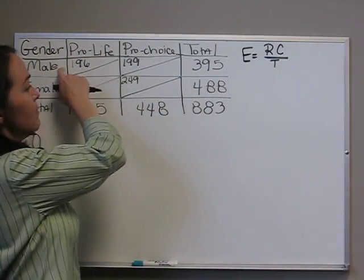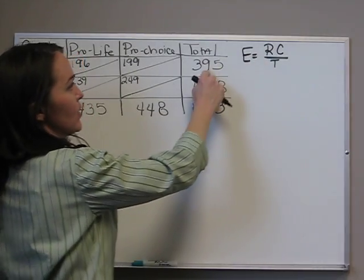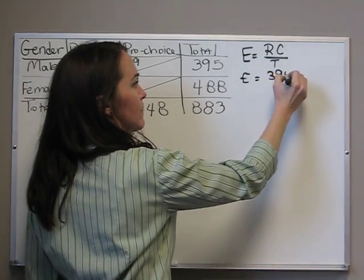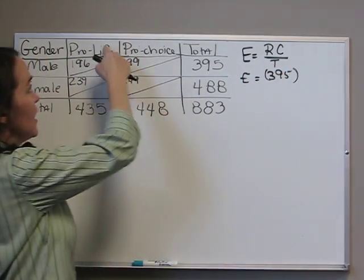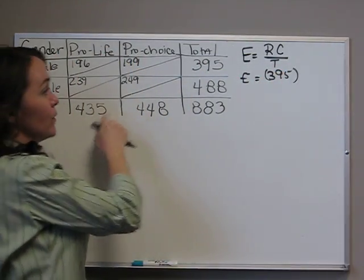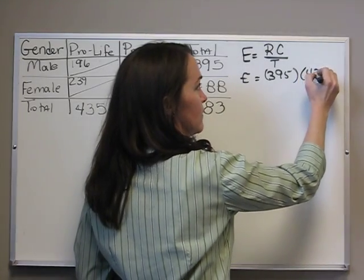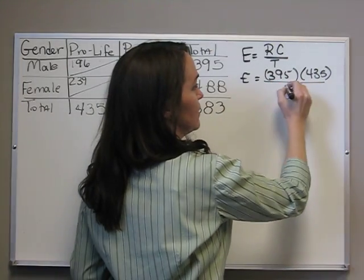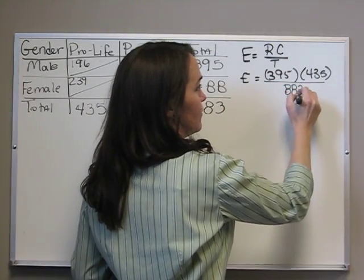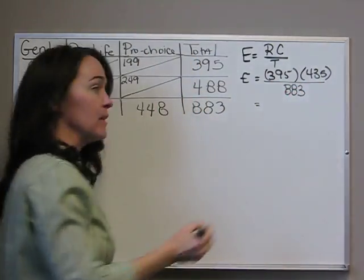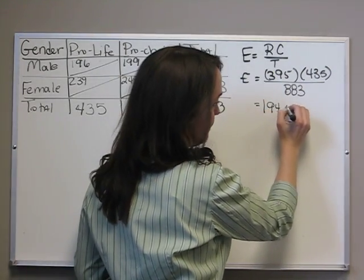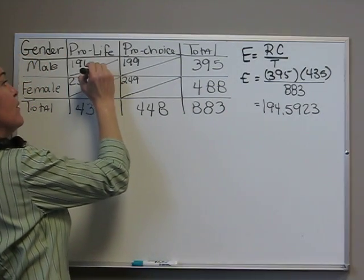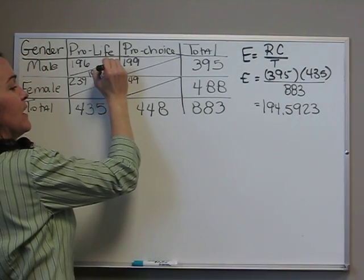For example, for the males, we would say 395 times the pro-life, which is 435, divided by the complete total, which is 883. When you do that, we get 194.5923. And we'll put 194.5923.